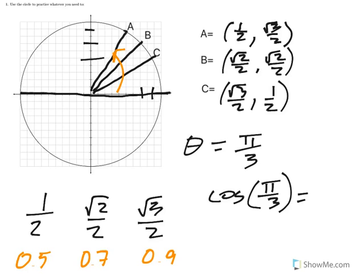We already identified that. And so cosine is the x-coordinate of A. And I'm trying to circle the x-coordinate of A. It's 1/2.